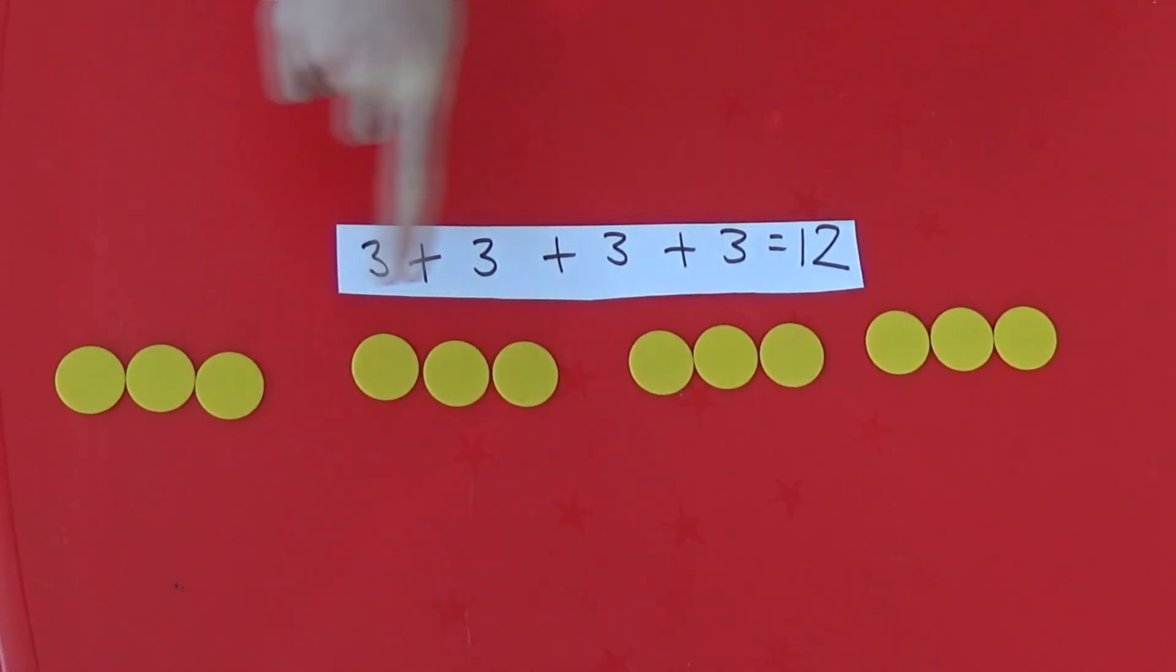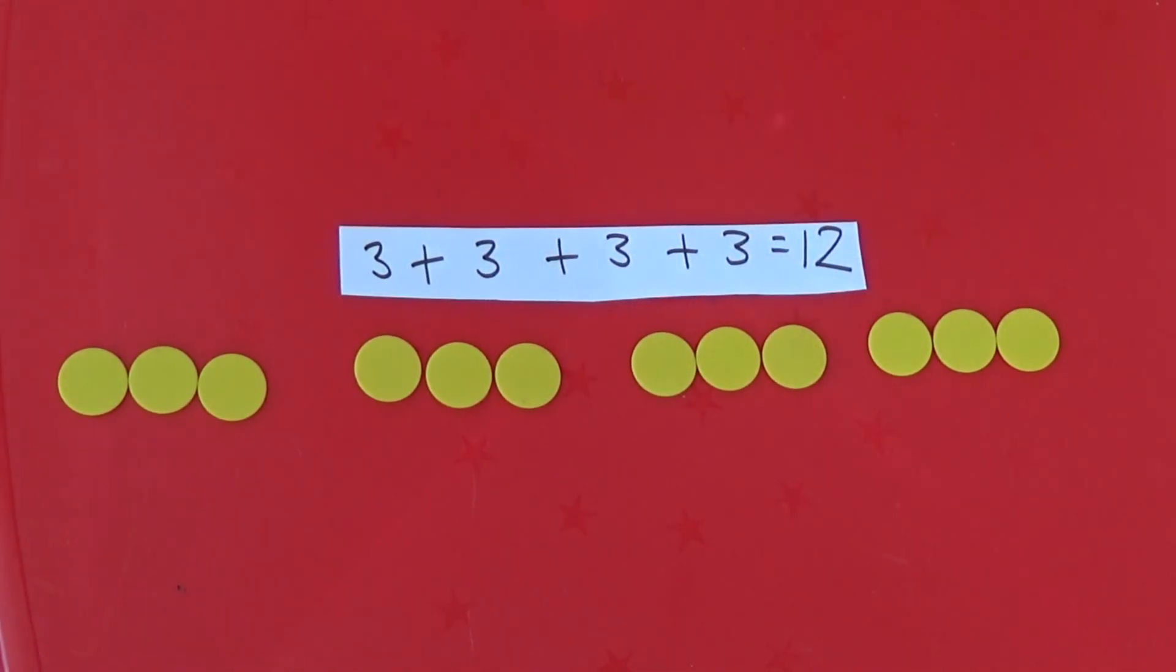We can use counters to help us understand repeated addition. Here, we have three plus three plus three plus three, which is twelve.